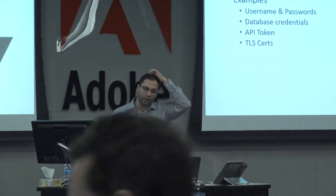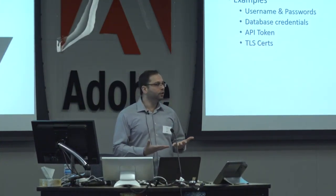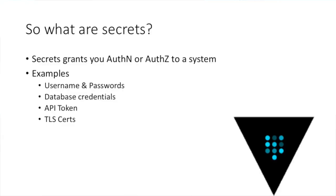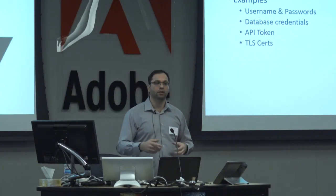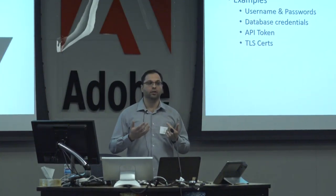So what are secrets, basically? Secrets allow you to have authentication and authorization. Your username, your password, your database credentials are all secrets. Your API token to consume another service is also a secret. Your TLS certificate for mutual authentication between applications — those are secrets too. Addresses and phone numbers aren't really considered secrets; those are more like sensitive or personally identifiable information — PII. You want to protect those too, but today we're talking about secrets that actually allow you to open doors.